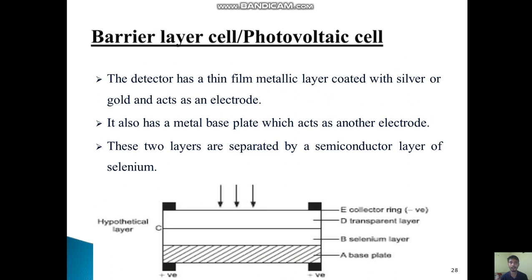We will see the first one, the barrier layer cell or photovoltaic cell. The detector has a thin film metallic layer coated with silver or gold and acts as an electrode. It also has a metal base plate which acts as another electrode. These two layers are separated by a semiconductor layer of selenium.